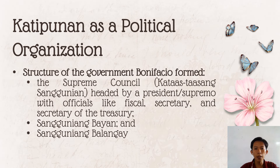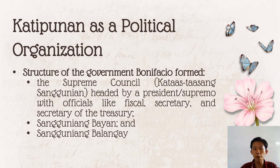Bonifacio formed the Supreme Council or 'Kataas-taasang Sanggunian,' headed by the President or Supremo, with officials like Fiscal, Secretary, and Secretary of the Treasury. Relating this to today's government: the Supreme Council is equivalent to our national government, the Sangguniang Bayan to the provincial government, and the Sangguniang Balangay to the municipal government.